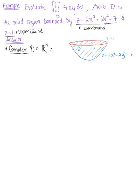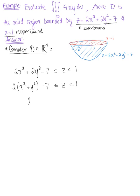We can see that z is greater than or equal to 2x squared plus 2y squared minus 7, but less than or equal to 1. Since we want to convert to polar coordinates, I'll factor a 2 out, giving 2 times (x squared plus y squared) minus 7 ≤ z ≤ 1. Replacing x squared plus y squared with r squared, we get 2r squared minus 7 ≤ z ≤ 1.